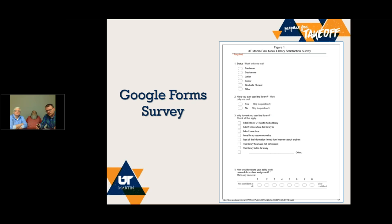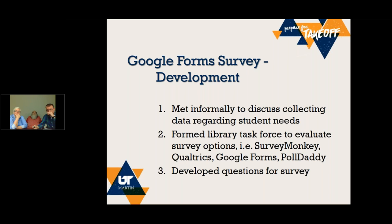We're going to talk about the high-tech option — a Google Forms survey. I've given you a screenshot of the first page of this survey. Keep in mind this survey was done online, so it didn't actually look like this to the survey takers — this is like a PDF version. Just to give you an idea of how we set it up using skip logic, let's talk about the development of this form. As Karen said, it did come along fairly quickly, but we did have to do some front-end work.